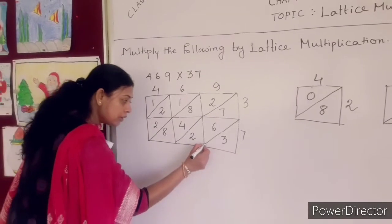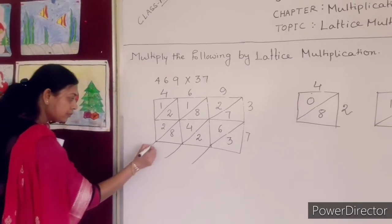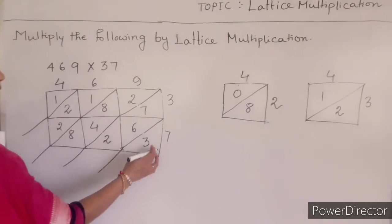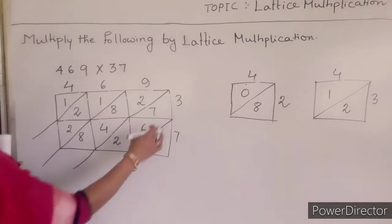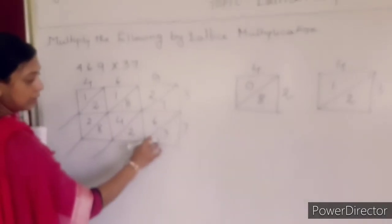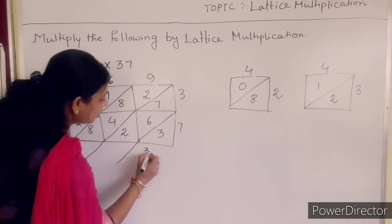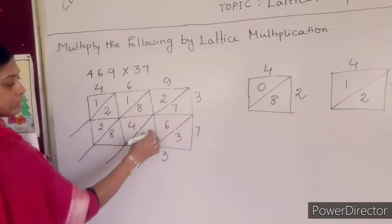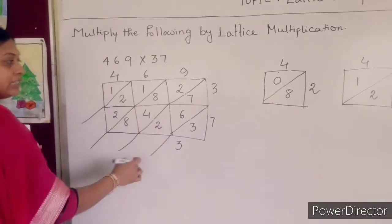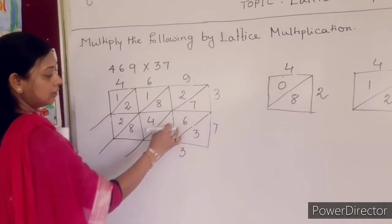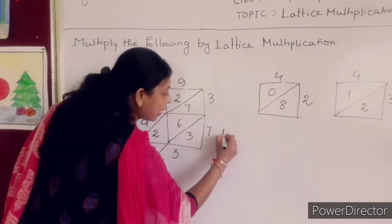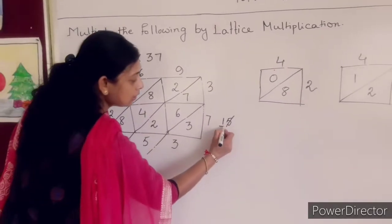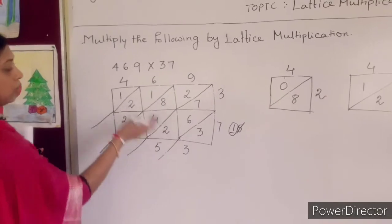Now you extend this line. You have to add the digits in each triangle. In this triangle only 3 is present, so you write here 3. In the next triangle — 1, 2, 3 triangles — here are present 7, 6, and 2. You have to add these 3 digits: 7 plus 6 is 13, 13 plus 2 is 15. So you write 15 here — write 5 and carry 1.